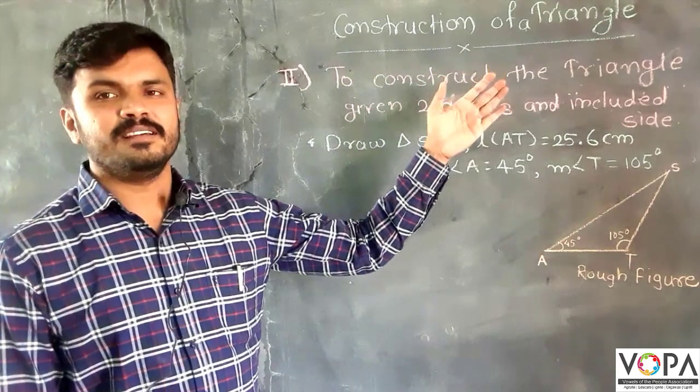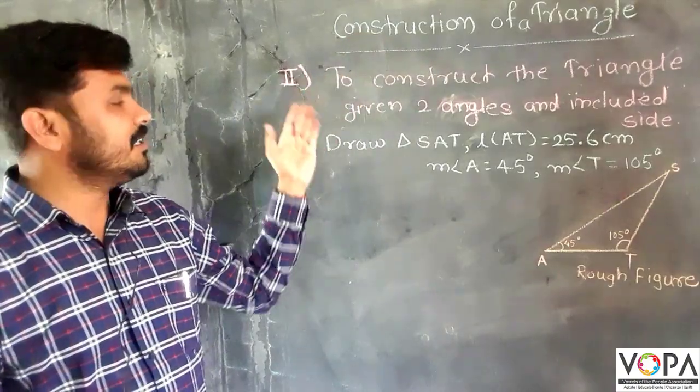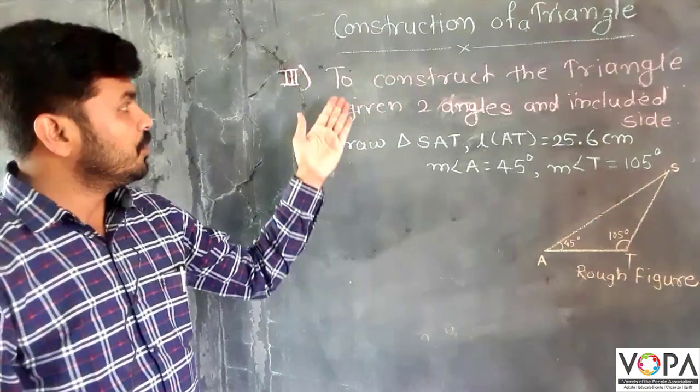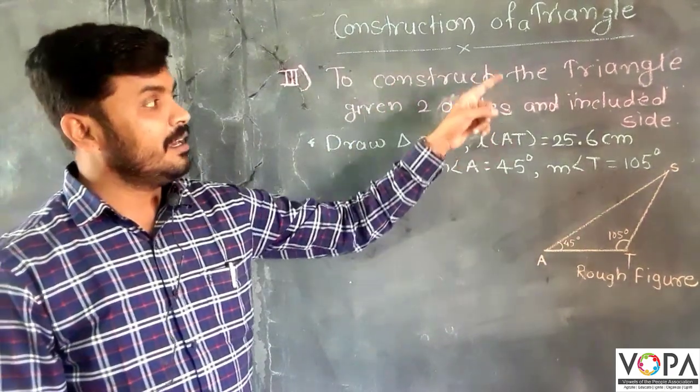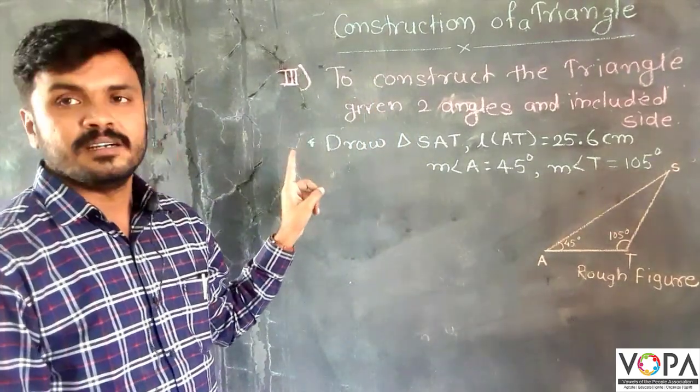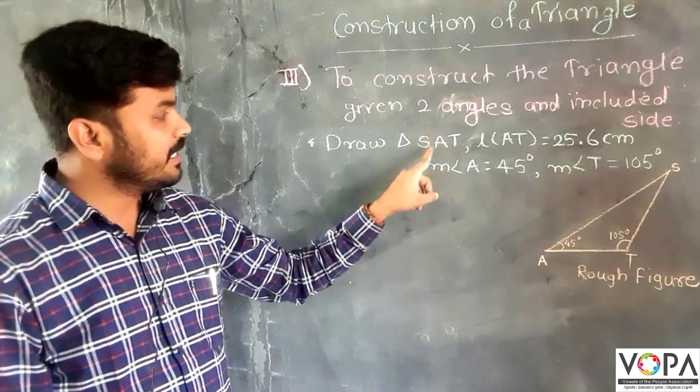The construction of a triangle. This is the third way to construct a triangle with given two angles and included side. Let's solve the question: draw triangle SAT.